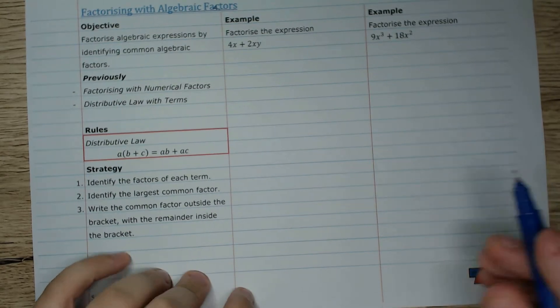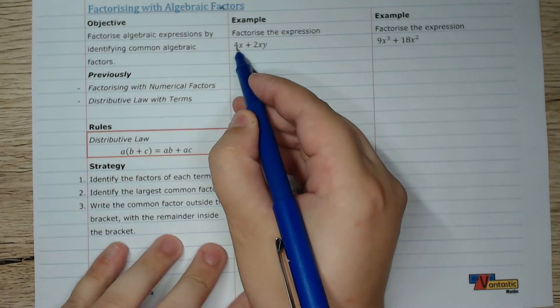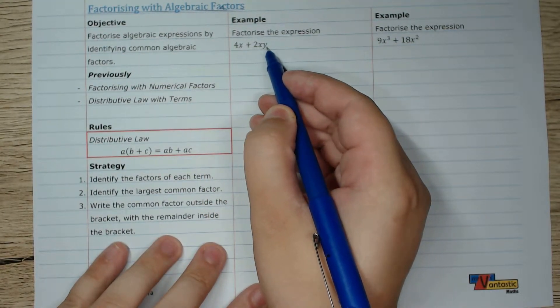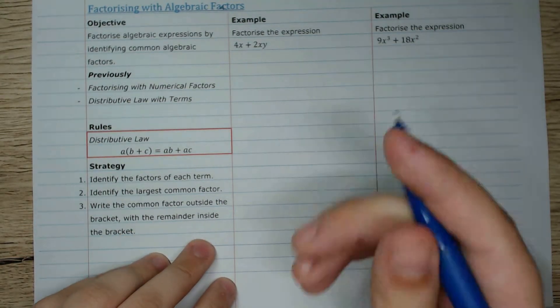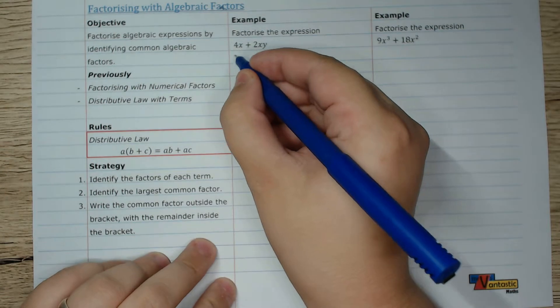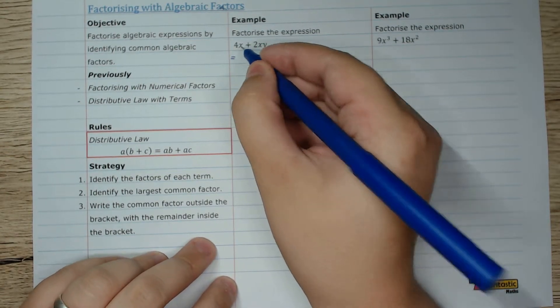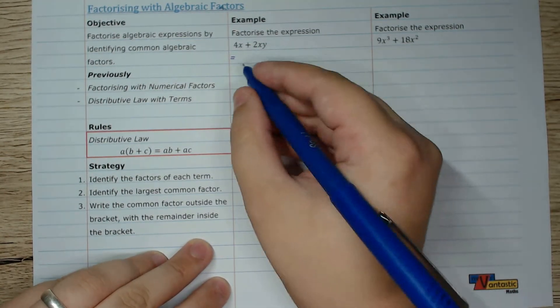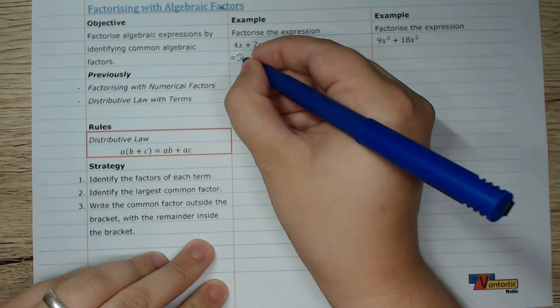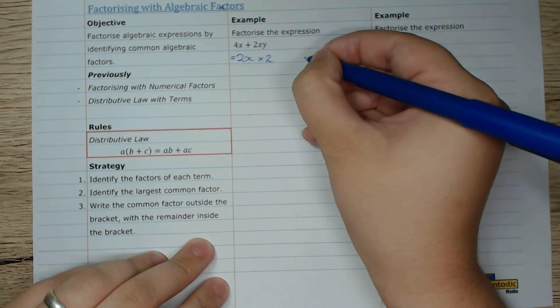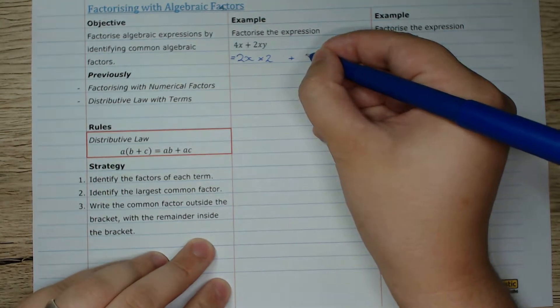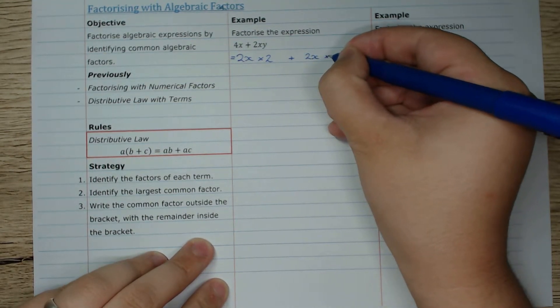Let's give that a crack. Here I've got the expression 4x plus 2xy and I'll use a shortcut this time. I can tell that 4x could be split up into 2x times 2 plus 2x times y.